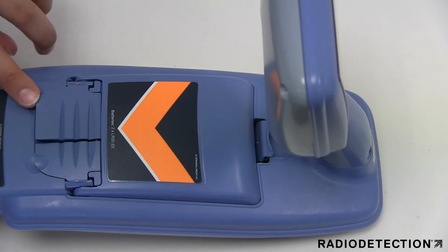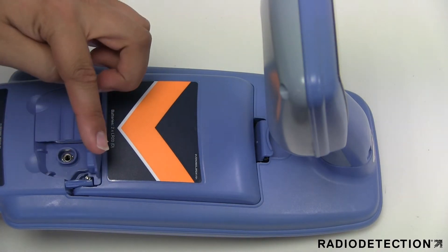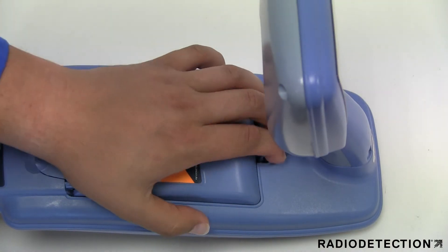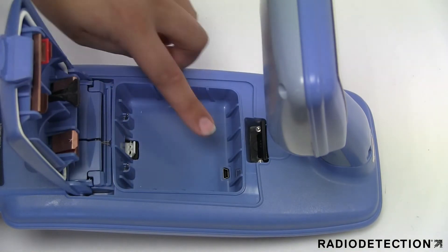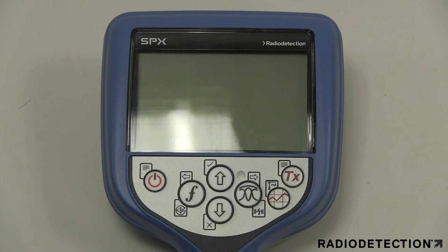The Precision Locator features an accessory socket, headphone socket, battery compartment, USB connector, LCD screen with auto backlight and keypad.